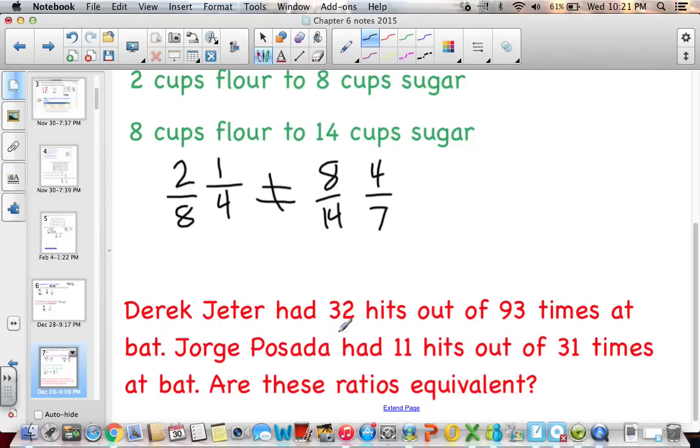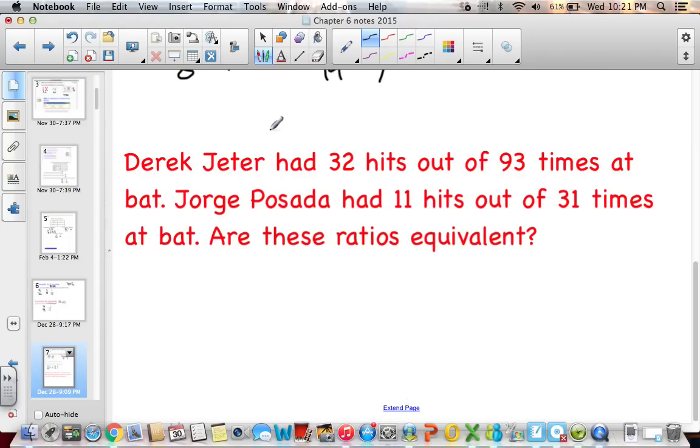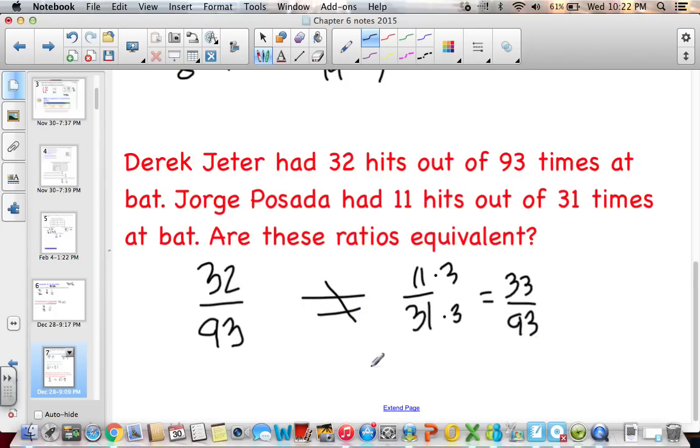I'm going to have you pause me really fast and read this problem and determine if they're equivalent. And then check back and see if you are correct. So if Derek Jeter had 32 hits, out of 93 times at bat. And the other guy, Jorge Posada, had 11 out of 31. I'm going to, I know that 31 can go into 93 if I multiply it times 3. And then if I multiply that times 3. So I would get 33 93rds. And I have 32 over 93 here. So that means, again, that they are not equivalent.